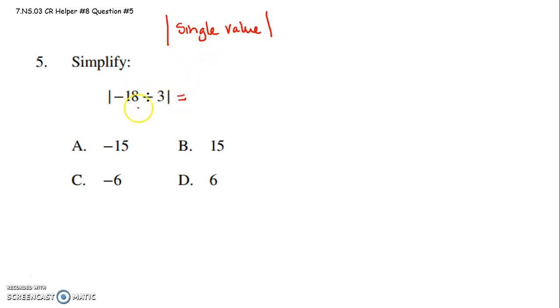So I know right now I'm not ready to take the absolute value yet. I first have to perform the operations within. So I have to do negative 18 divided by 3.